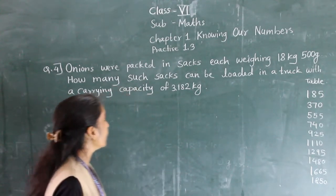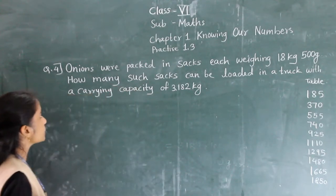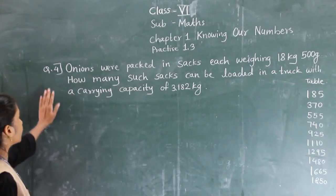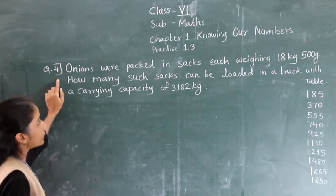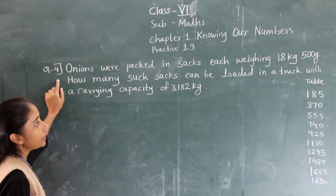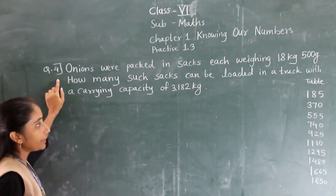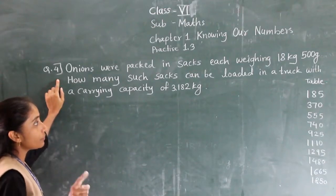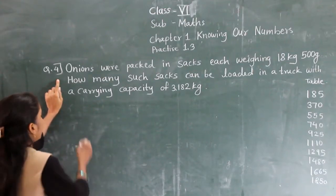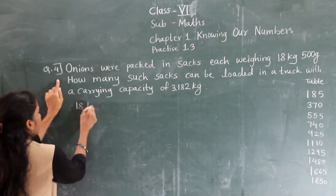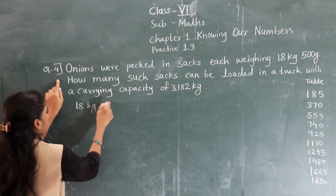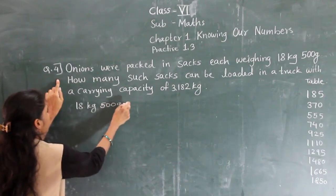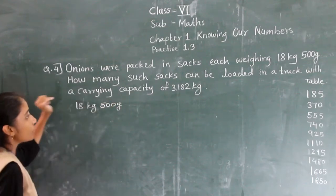Hello everyone, today we are going to start Practice 1.3, Question 4. Onions were packed in sacks, each weighing 18 kg 500 grams. So the weight of 1 sack is 18 kg 500 grams.